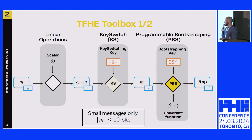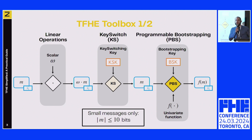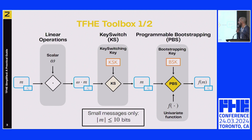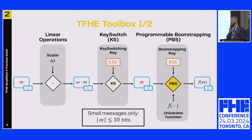There are also possibilities to compute linear operations—the classical additions and multiplication by scalar. A major restriction is the precision of the message: using the PBS, we are restricted to 10 bits maximum to compute over plaintext.